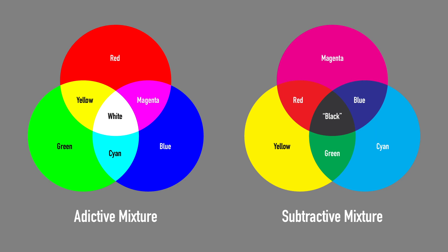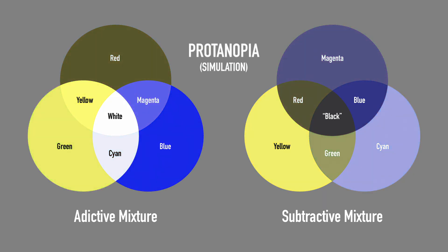Protanopia, or anomalous trichromacy, is the absence or deficiency of cones sensitive to long waves — red — resulting in another form of inability to distinguish red from green. Cyan and magenta appear to be the same color, changed only in terms of luminosity. Yellow and green are also barely distinguishable, appearing as the same color changed only in luminosity.